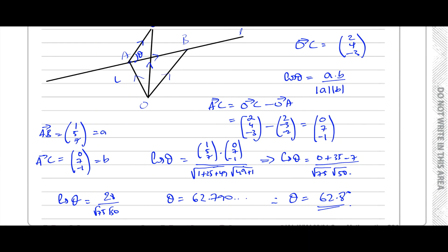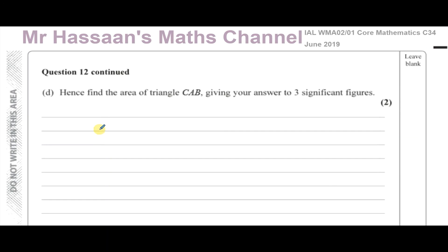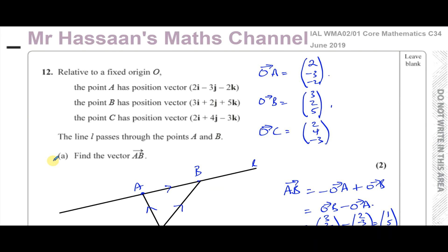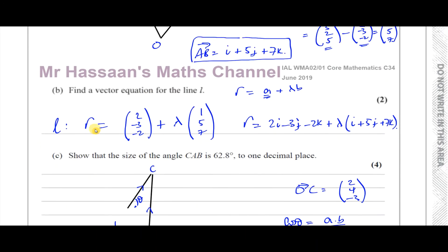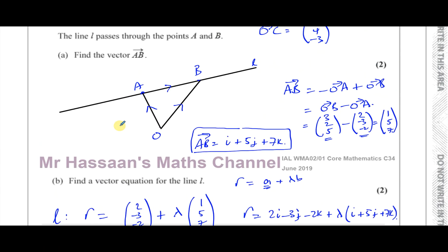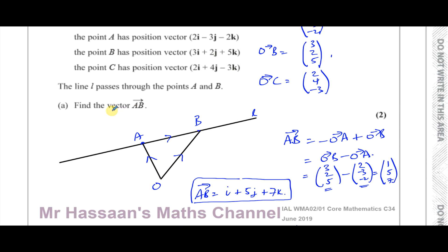Part D says find the area of triangle CAB to three significant figures. I'm going to cover part D in a separate video — I'll put a link so you can click through to the next video. See you there.